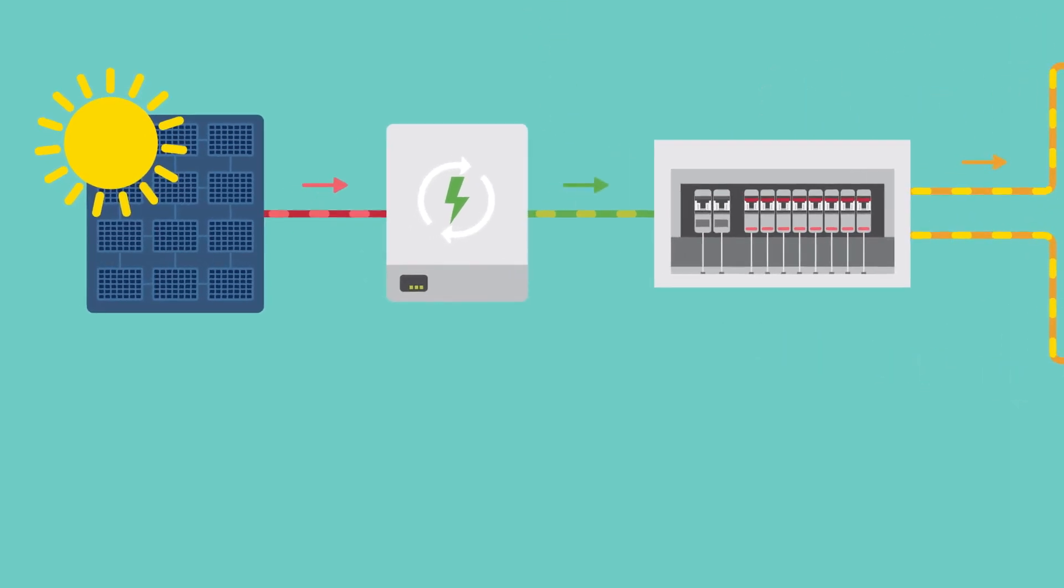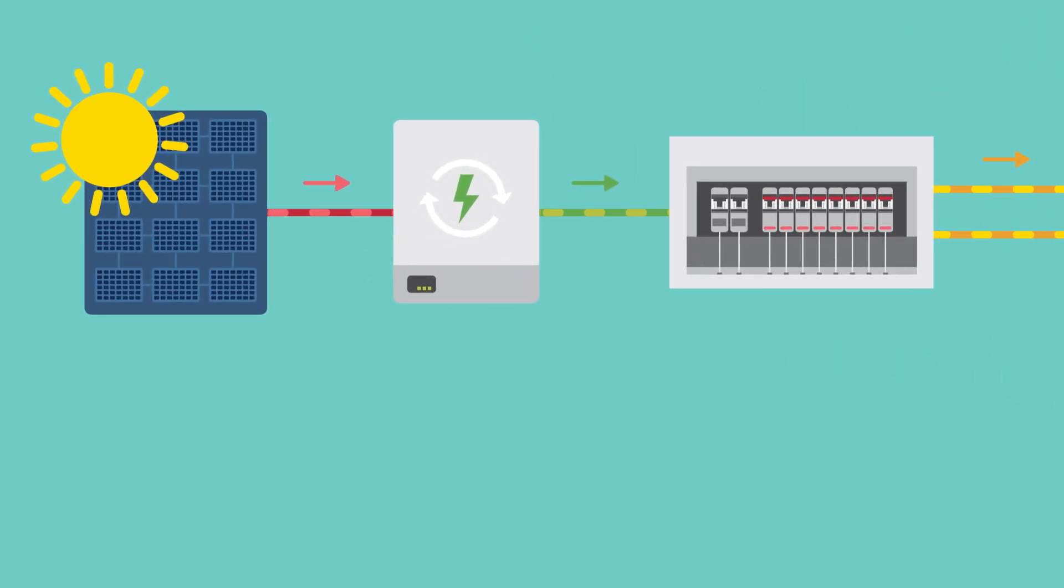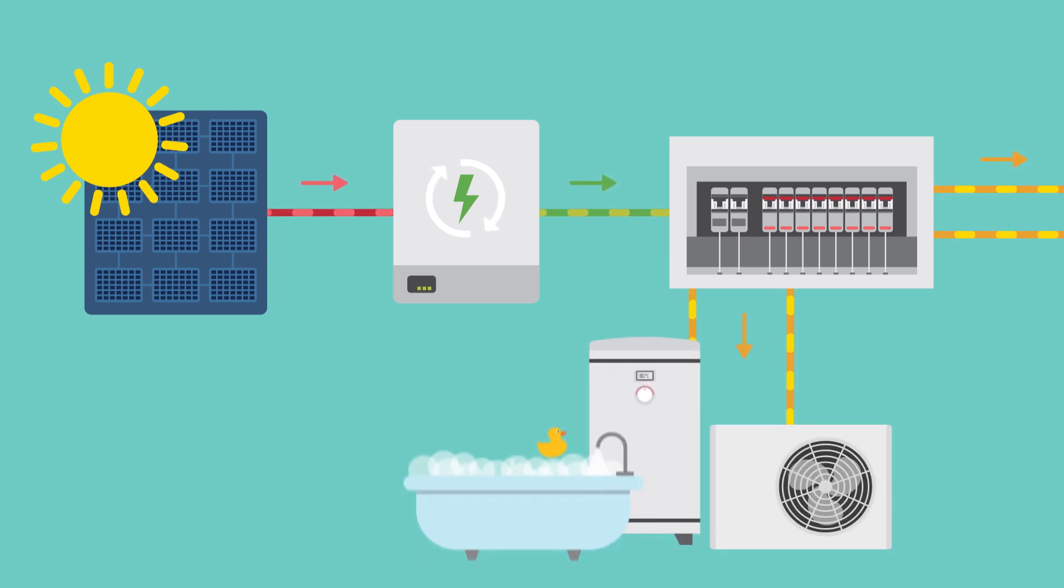When your solar PV generates more power than your appliances are using, the excess can be diverted to your immersion or heat pump to heat your water. It can also be stored in a battery for use later.